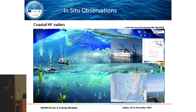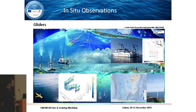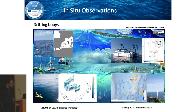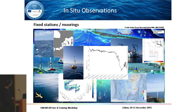We are planning to integrate HF radars too — they are not yet included, but they will be, measuring surface current fields. We have gliders which obtain profiles of salinity, temperature, chlorophyll, and oxygen. We have drifting buoys measuring at the surface, including trajectories. And finally, we have moorings or fixed stations which obtain time series for temperature, sea level, significant wave height, and many other parameters.